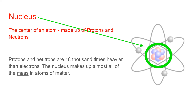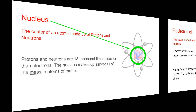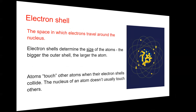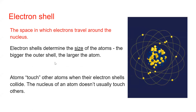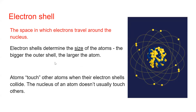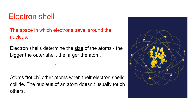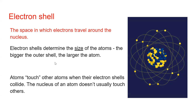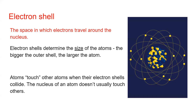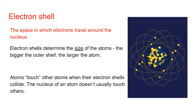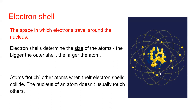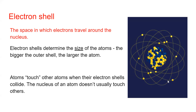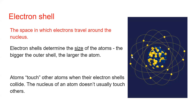A proton is 18,000 times heavier than an electron, so the nucleus makes up the mass of an atom except for a tiny bit. For our purposes, electrons have no mass — we will pretend that electrons have zero mass. The electrons travel on the outside of the atom; they're not in the nucleus.